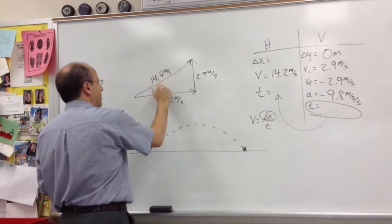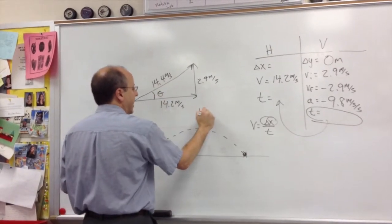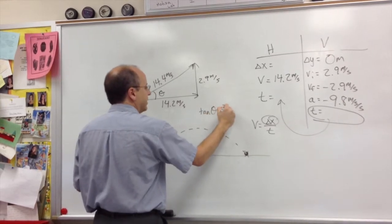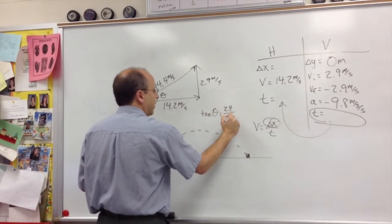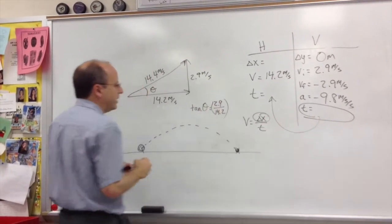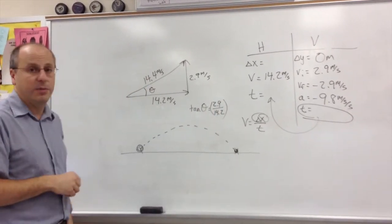You also need to find the angle that she hits the ball. And you do that using tangent. Tangent of the angle is equal to the opposite over the hypotenuse. So just do second tangent of the quantity 2.9 divided by 14.2.